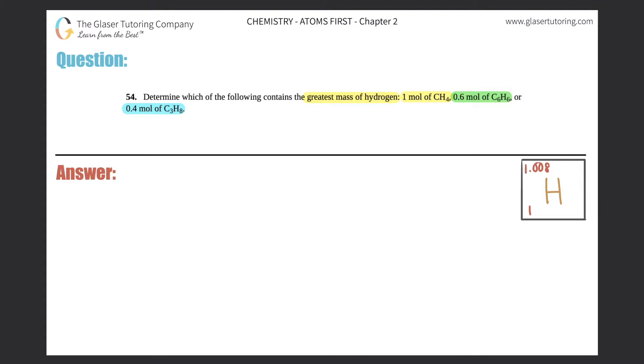And we want to find the greatest mass of just hydrogen. So I have hydrogen. Now the problem here is that all the ones that they gave us, or they gave us compounds, right? But the question is, which one is the greatest in just a single element?